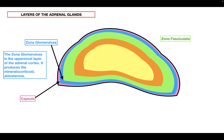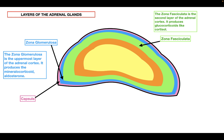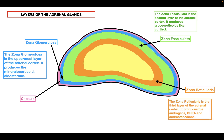The second layer of the adrenal cortex is the zona fasciculata. The zona fasciculata is responsible for mainly producing the glucocorticoid cortisol. The final layer of the adrenal cortex is the zona reticularis, which is responsible for mainly producing androgens like DHEA and androstenedione.